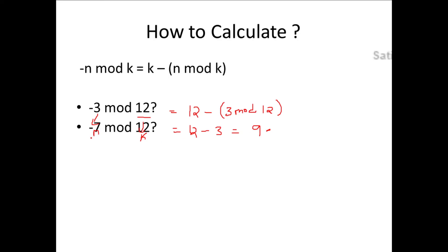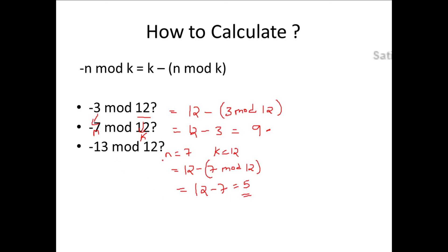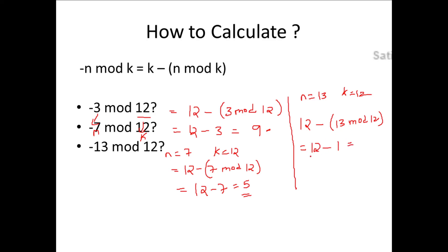Let's take minus 7 mod 12. Here n is 7 and k is 12. Substituting: 12 minus (7 mod 12) = 12 minus 7 = 5. Now, minus 13 mod 12: n is 13, k is 12. Substituting: 12 minus (13 mod 12). Since 13 mod 12 is 1, we get 12 minus 1 = 11. So minus 3 mod 12 is 9, minus 7 mod 12 is 5, and minus 13 mod 12 is 11.